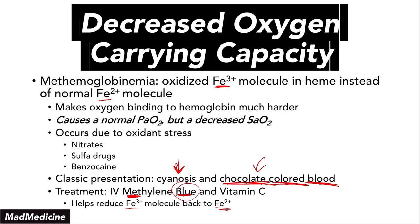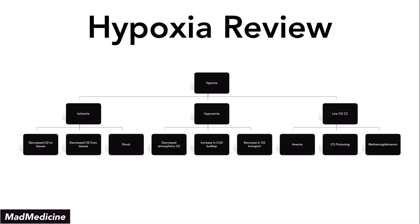That's essentially everything you need to know about hypoxia between part one and part two, covering hypoxemia and decreased oxygen carrying capacity. Let's do a quick review. Hypoxia has three main causes. Number one is ischemia — decreased oxygen to the tissues from an arteriolar blockade, venous blockade, or shock, which involves both arteriolar and venous plus overall perfusion. This leads to ischemic hypoxia.